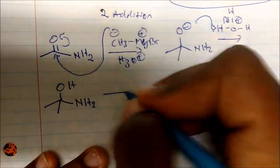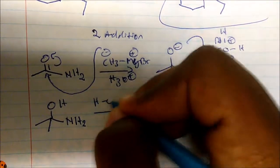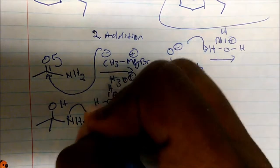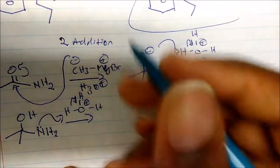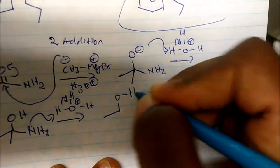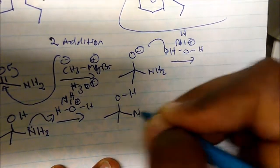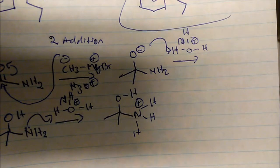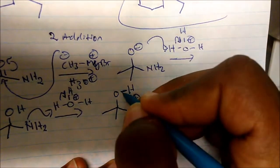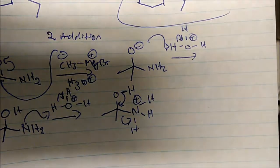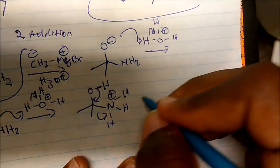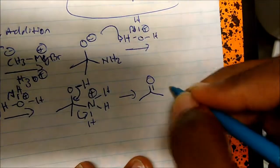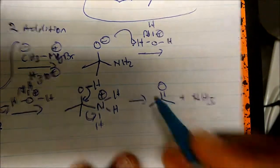We have plenty of acid in solution, so the lone pairs of nitrogen will seek a proton. Once nitrogen grabs a proton, we have a structure with NH3+ — nitrogen with four bonds and a positive charge. Now these electrons form a double bond and displace ammonia. We get the ketone product — we have acetone in solution plus NH3. This is the major product.